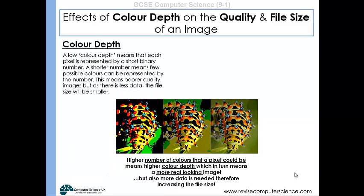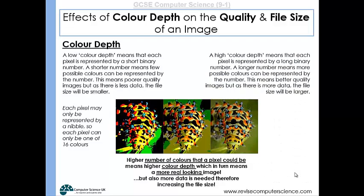A low colour depth means each pixel is represented by a short binary number. A shorter number means fewer possible colours can be represented, meaning poorer quality images, but as there is less data the file size will be smaller. For example, each pixel may only be represented by a nibble, so each pixel can only be one of sixteen colours. With a higher colour depth, each pixel is represented by a longer binary number, meaning more possible colours and higher image quality, but more data and therefore a larger file size. For example, each pixel may be represented by a 48-bit number, so each pixel could be one of 281 trillion colours.